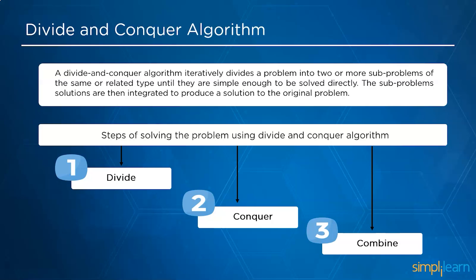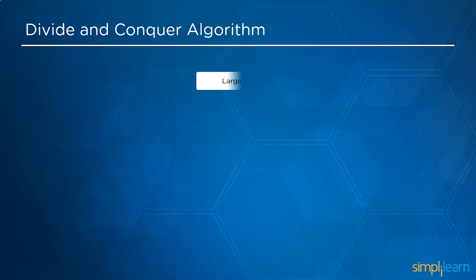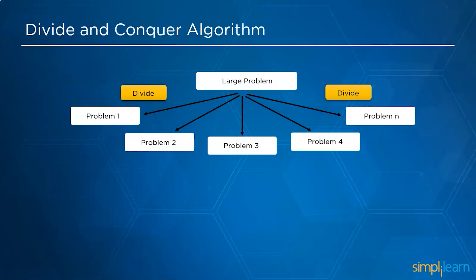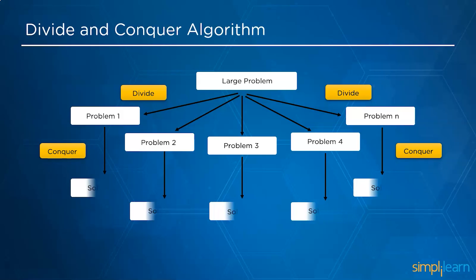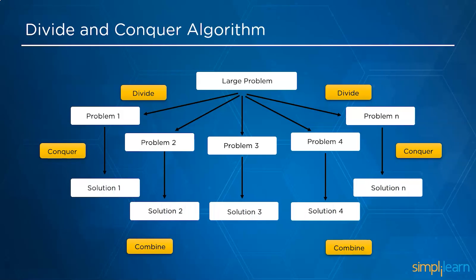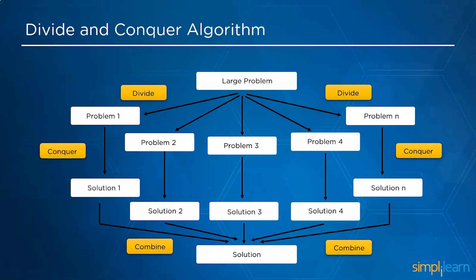The first step is to divide the significant problem into smaller subproblems. The second phase is to conquer the solutions to all divided subproblems. The final step is to combine and merge all of the solutions to create a definite solution. For example, suppose we have a large problem — we divide it into n subproblems such as problem 1, 2, 3, 4 and so on.